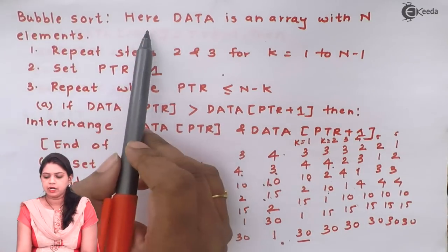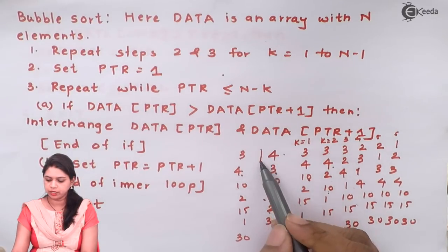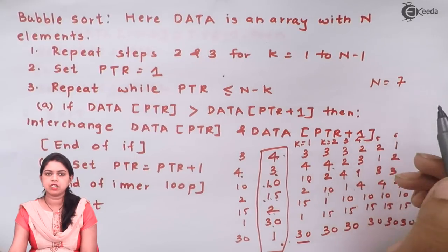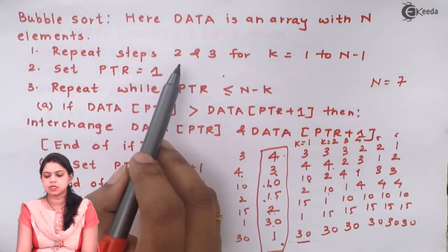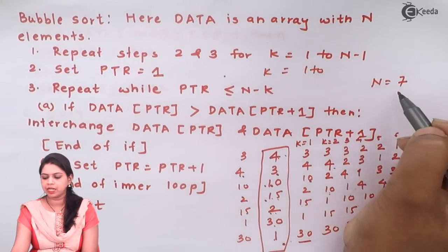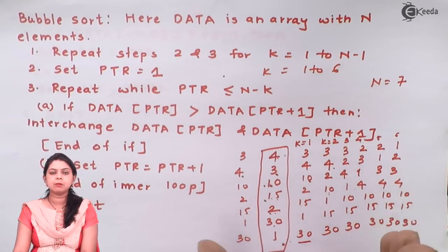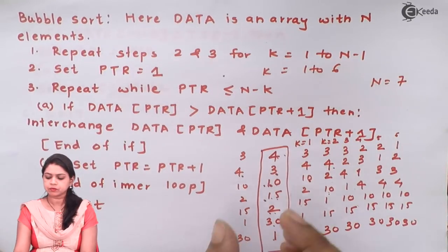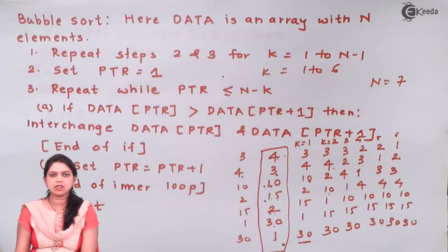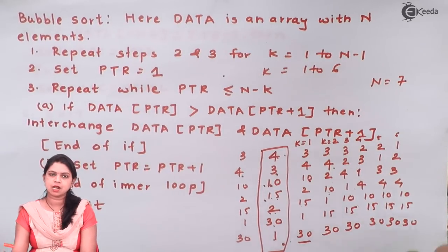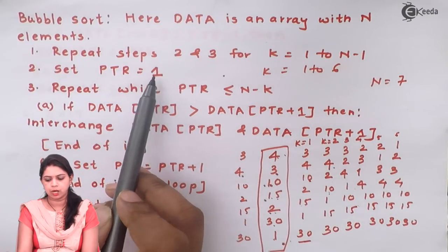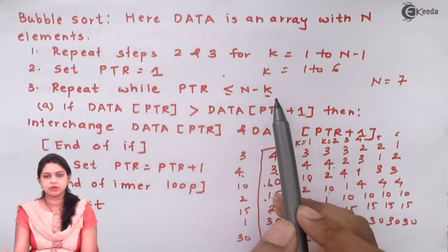Now let us relate this example with the algorithm. Here, 'data' is an array with n elements — in our case n equals 7. We repeat steps 2 and 3 for k equal to 1 to n minus 1, which is 1 to 6. So the total number of passes is always one less than the total number of elements. Maximum passes will be 6 since there are 7 elements. We set pointer equal to 1 and repeat while pointer is less than or equal to n minus k, where k is the current pass.